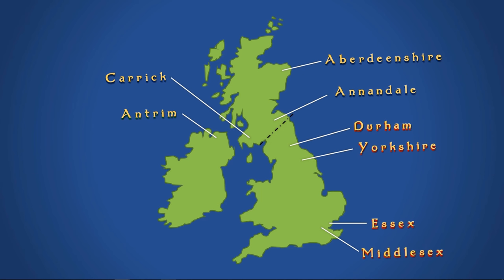One way we can answer this question is by looking at the parts of the British Isles controlled by the Bruce family. Within England, he controlled large parts of the north — actually Durham and Yorkshire — and in the southeast, areas of Essex and Middlesex. Within Scotland, he controlled the region of Annandale in the borders, the area of Carrick in Galloway, and to the northeast he controlled Aberdeenshire as well, and also Antrim in the north of Ireland.